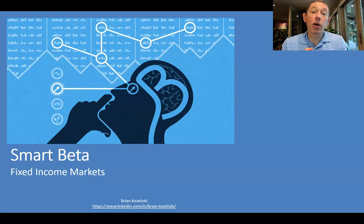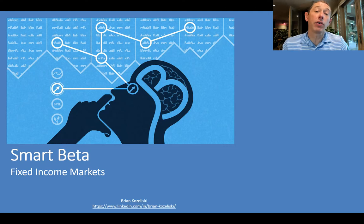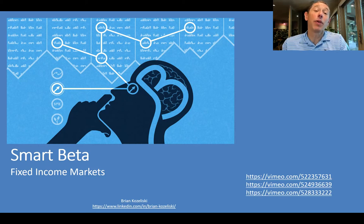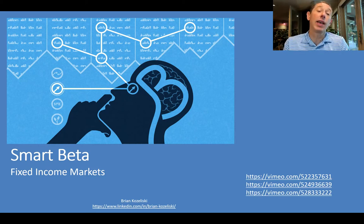Hello, today I want to talk about smart beta or market anomalies. I do have other videos on this topic — you can watch them by following the links. In general, when we think about anomalies, we think about the stock market, but today I want to focus specifically on the fixed income or bond market.